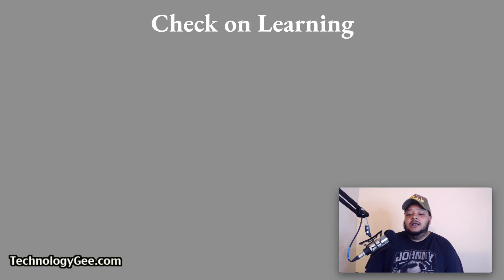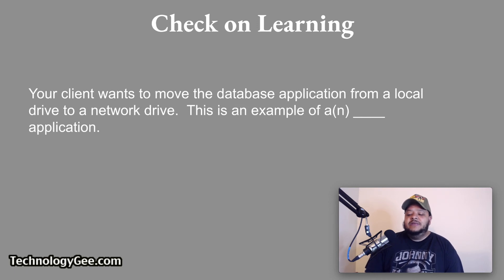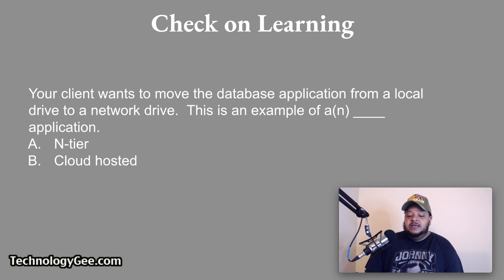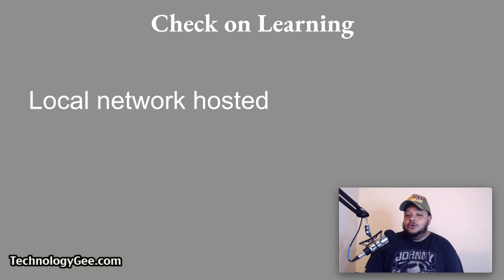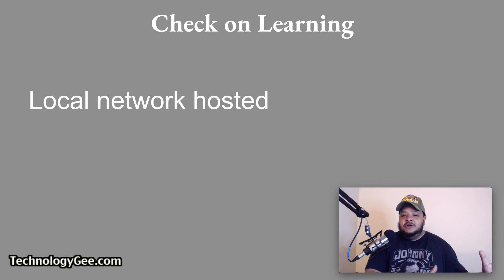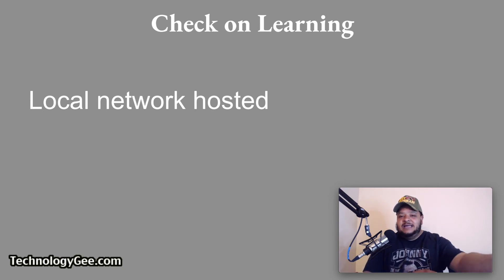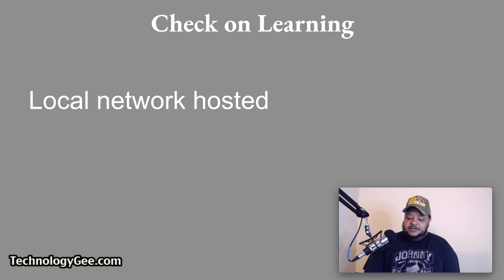Check on learning. Question one: your client wants to move the database application from a local drive to a network drive. This is an example of what type of application — n-tier, cloud hosted, wireless, or local network based? The correct answer is local network based. They want to take the information off their local computer and move it to a server hosted on the network, so that the local machine can reach out to that server and pull the information over the network.